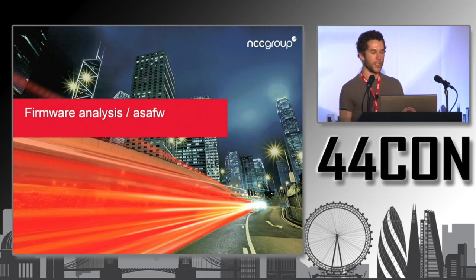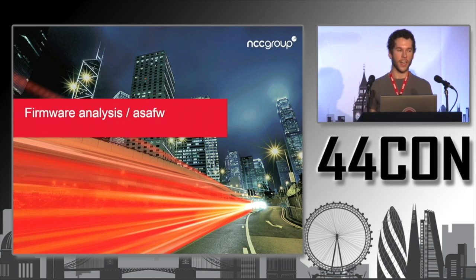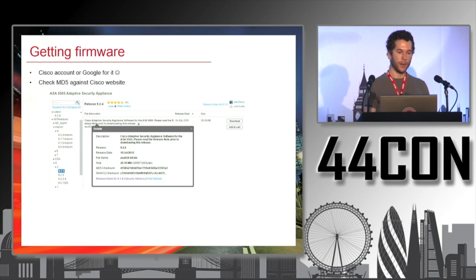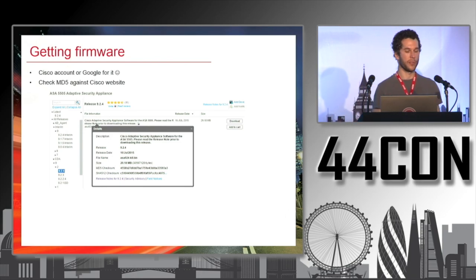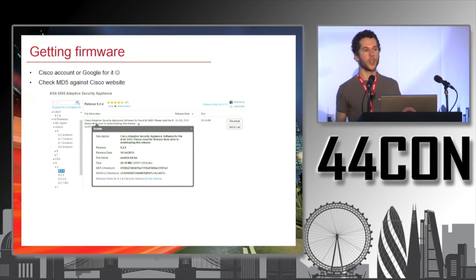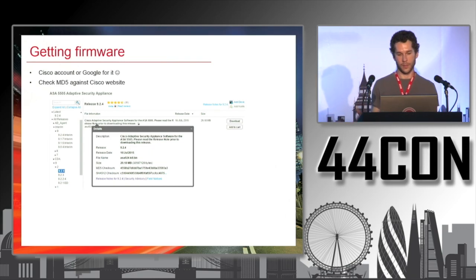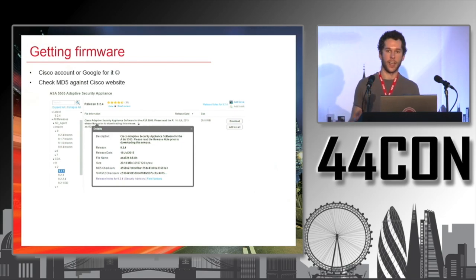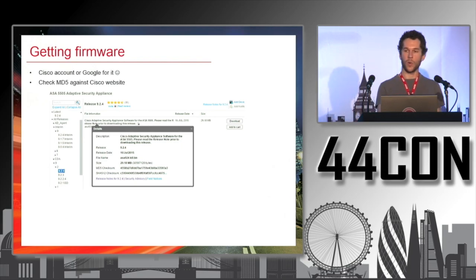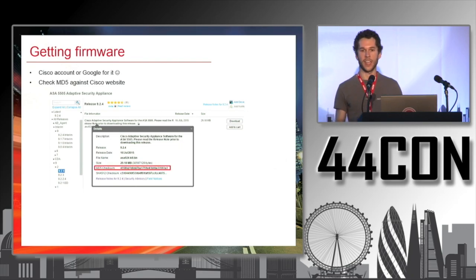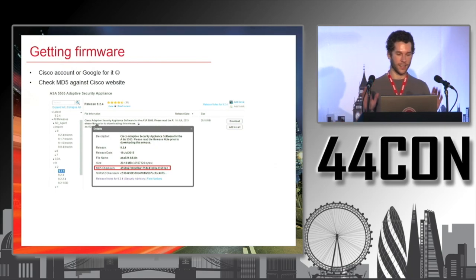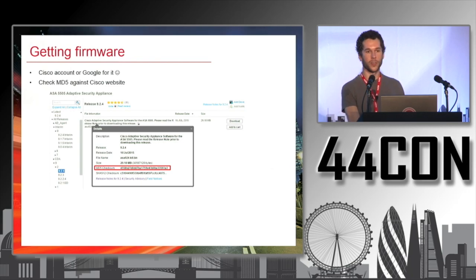So let's talk about analyzing the firmware. You can get firmware from the CF card, but if you want different versions, you can download them from the Cisco website if you have an account. Otherwise, you can find most of them on Google, since people share them on public websites. But if you find firmware on the internet, check the MD5 against the Cisco website — otherwise you may install backdoored firmware.